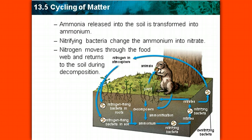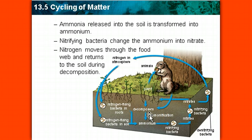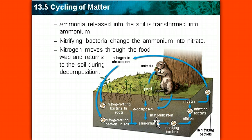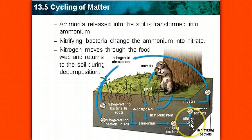Ammonia is released into the soil and is transformed into ammonium. Ammonia is found in urine, but it's also released through decomposition. After that, ammonification occurs. The nitrifying bacteria then change the ammonium into a nitrate. The nitrogen can then move through the food web and return to the soil again during decomposition.